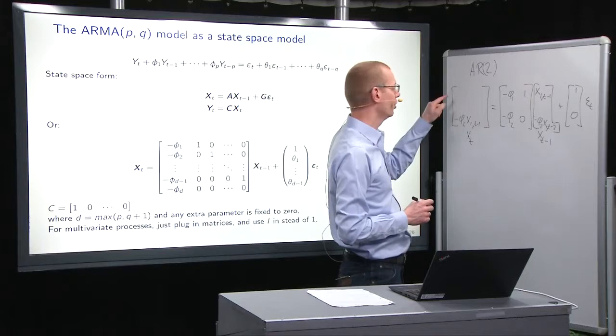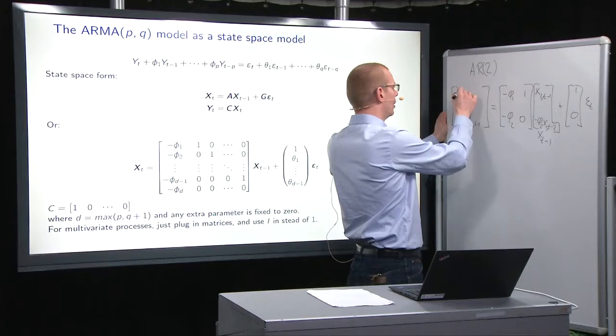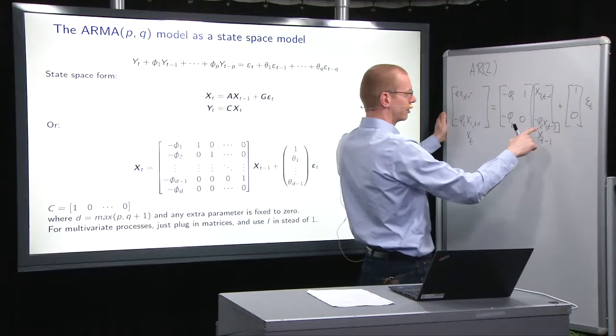So, now what is left is to write what comes out up here. So, let's start from the top here. We have minus phi_1 x_1,_{t-1}, then we have minus,